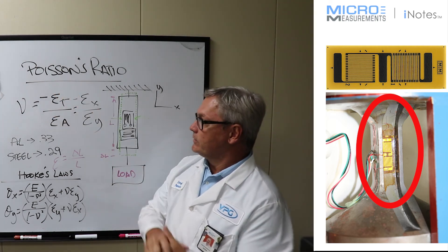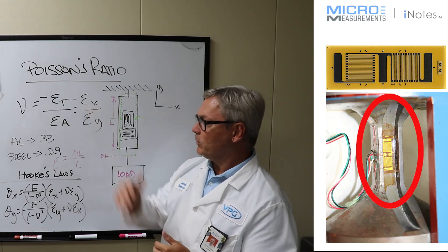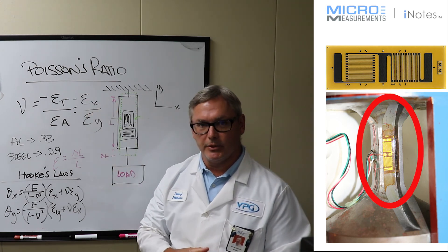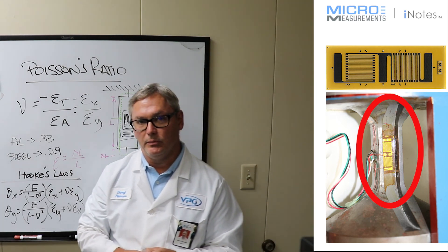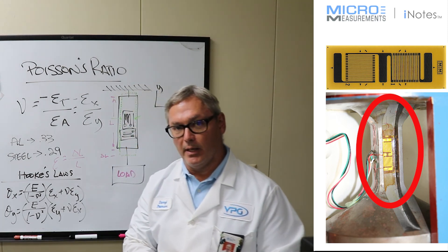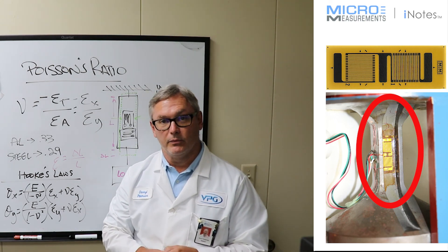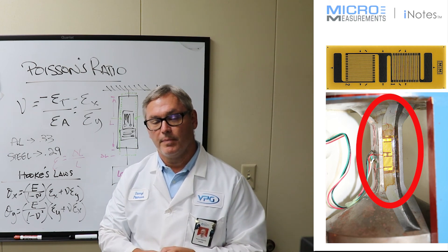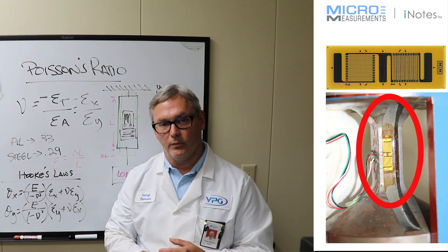So that's Poisson's ratio in a nutshell. If you'd like to find out more about Poisson's ratio or strain gauges in general please feel free to take a look at our website at www.micro-measurements.com or you can call us in applications engineering by dialing 919-365-3800 and follow the prompts until you get to applications engineering. Thank you.